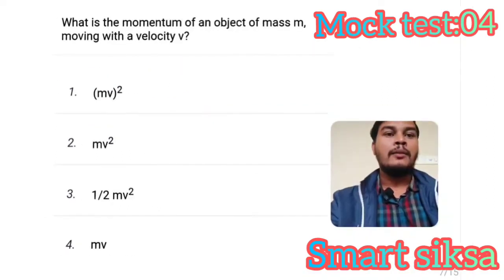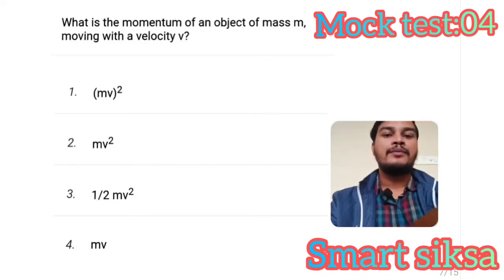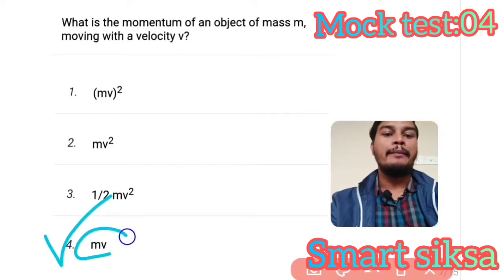Next question: What is the momentum of an object of mass M moving with a velocity V? Answer is option number 4 — MV. Momentum is MV.